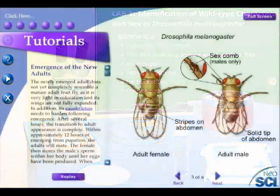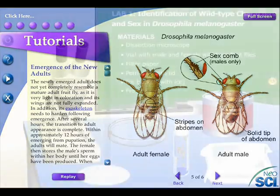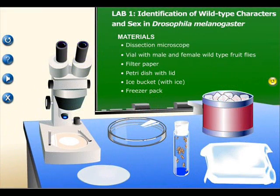Important in the analysis of the lab is the sexing of the wild-type flies. The differences between male and female wild-type are clearly shown in this picture. Males tend to have a rounded abdomen with a darker tip and contain sex combs on the forelimbs. Females have a more pointed abdomen with light pigmentation and no sex combs on their forelimbs.